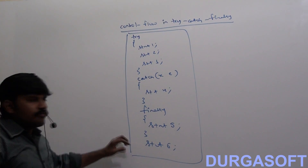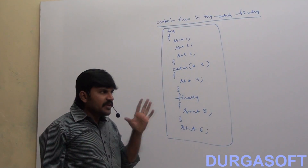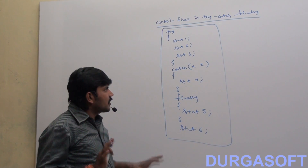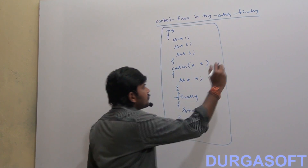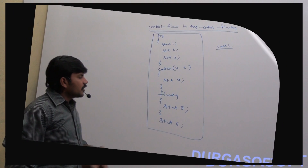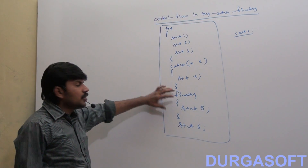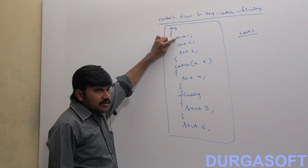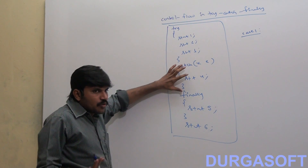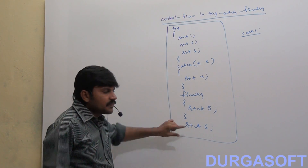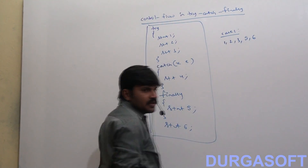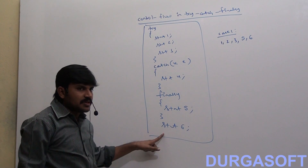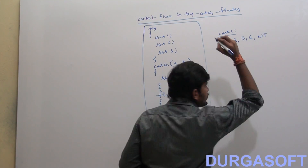From statement 1 to 6, anywhere an exception may rise. Case 1: If there is no exception, in which order will the statements execute? They execute as 1, 2, 3 — the catch block won't be executed because there is no exception — then 5 and 6. So the order is 1, 2, 3, 5, 6. Is it normal or abnormal termination? Normal termination, because there is no exception.